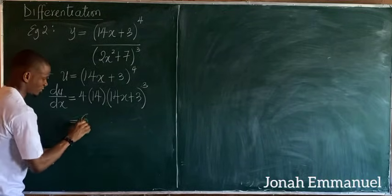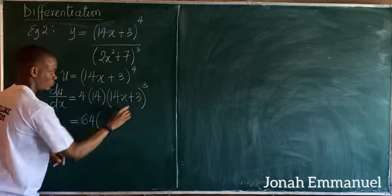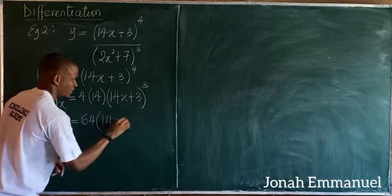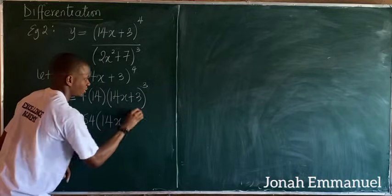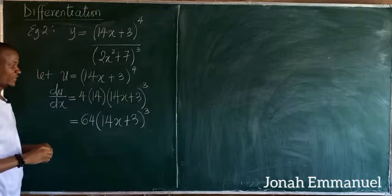Multiplying 4 and 14 together gives 64. So du/dx equals 64 times (14x + 3) all to the power 3.